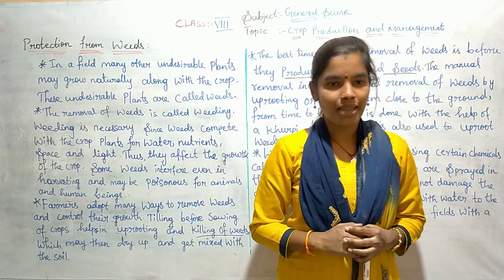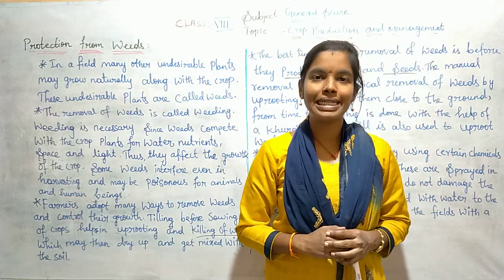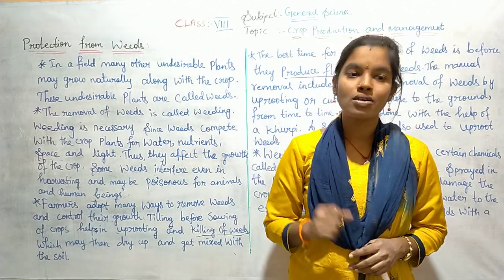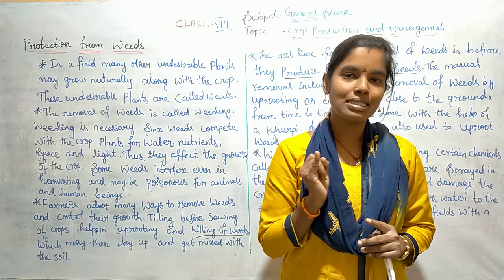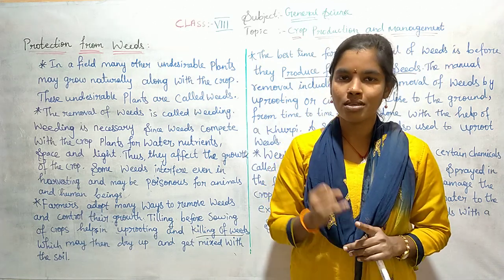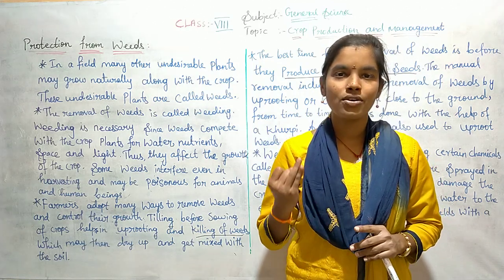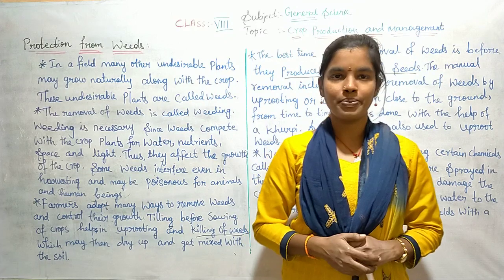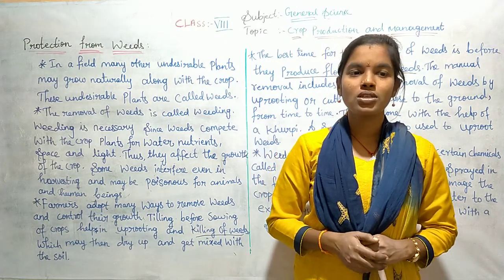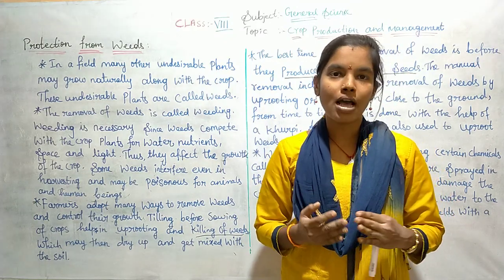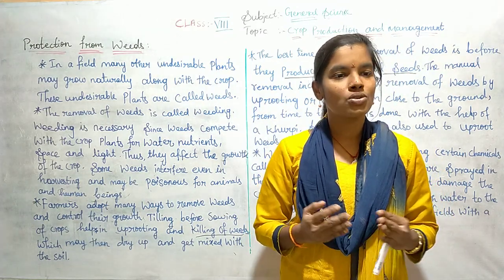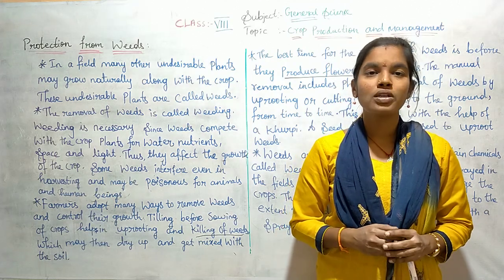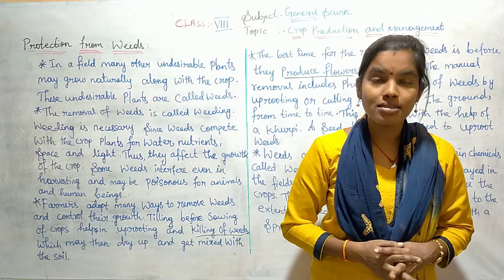Second riddle: what are the three R's that keep our planet clean? The first one is Reduce, the second one is Reuse, and the third one is Recycle. So these are the three R's which will keep our planet clean.